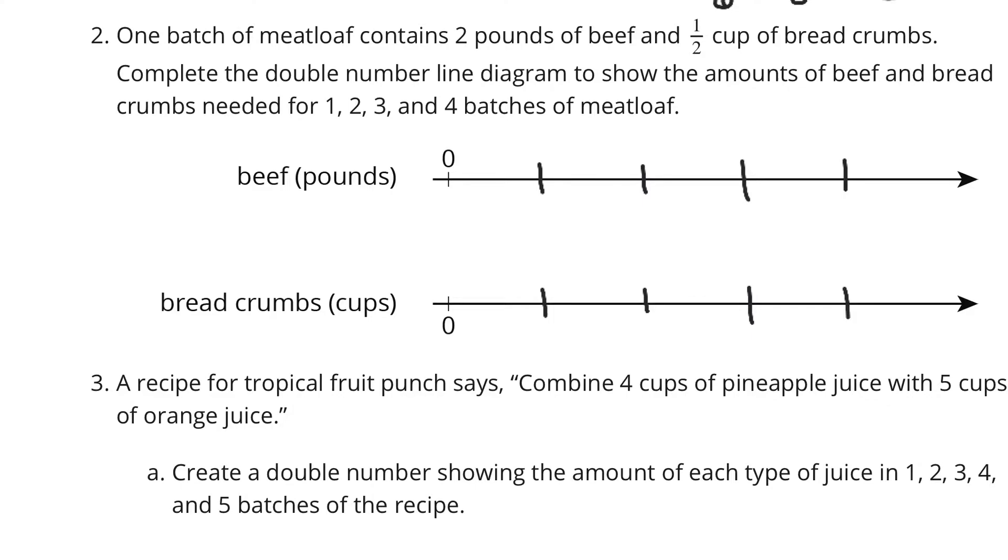2 pounds of beef, half a cup of breadcrumbs. So our first batch would have 2 pounds of beef and half a cup of breadcrumbs. And then on the top, we're counting by 2s. So 0, 2, 4, 6, and 8.